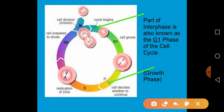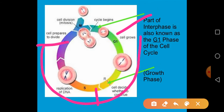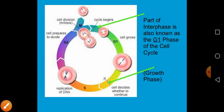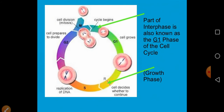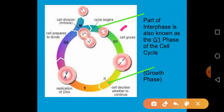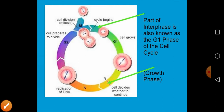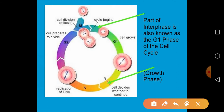In the cell cycle diagram, we can see the G1, S, and G2 phases which together make up the interphase, and the M phase or mitotic phase. The G1 phase is the first gap phase, also called the growth phase, where different proteins required for the S phase are synthesized.